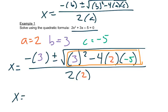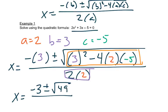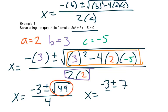You should get 49 for that whole inside expression. That leaves us with negative 3 plus or minus the square root of 49, and at the bottom we have 2 times 2 which is 4. We know from last chapter that the square root of 49 is 7, so this really is x equals negative 3 plus or minus 7 over 4 — we drop the square root symbol because we've already taken it.